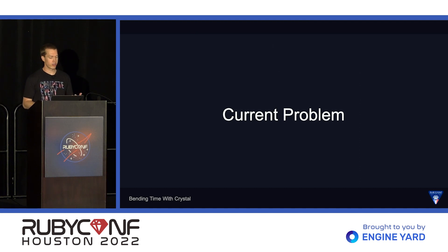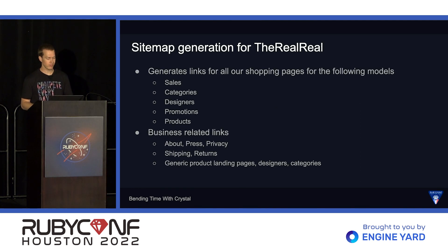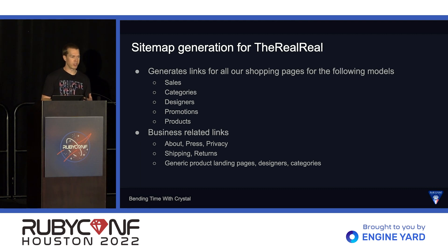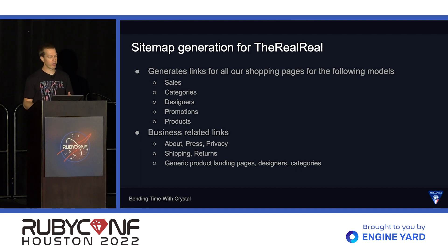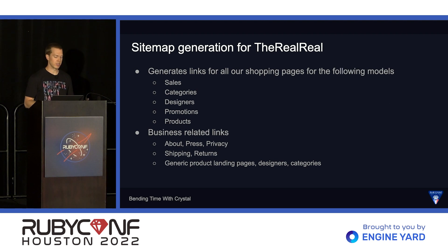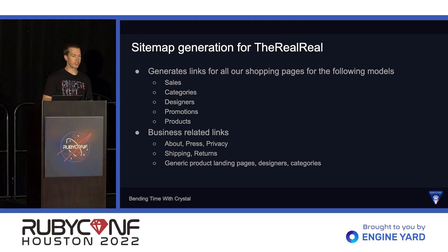So let's take a look at our current problem that we're dealing with at The RealReal — sitemap generation. We generate links for all of our shopping pages to be indexed in search engines. This includes every sale, every product category, designer, promotion, and every product that's currently for sale. We also include some business-related links such as About Us, press pages, shipping return info — pretty much all the standard things that you would want indexed in search engines.